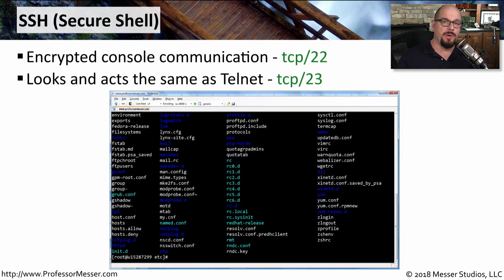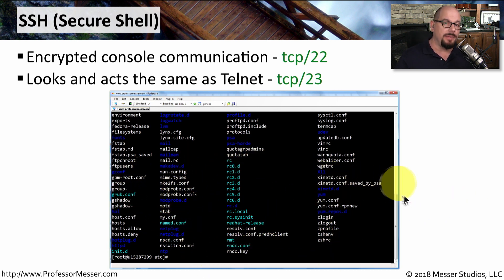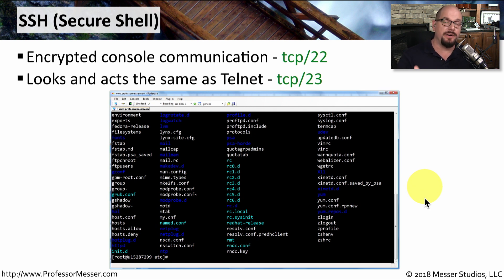Another popular remote access technology is SSH, or Secure Shell. This allows us to have a console screen where we can work at the command line. Very commonly, we use SSH to connect to routers, switches, firewalls, and other devices where we need a terminal session, and it encrypts all communication over the network. SSH replaces Telnet, which provided a very similar terminal screen, but all communication with Telnet is in the clear, whereas all communication with Secure Shell is encrypted.